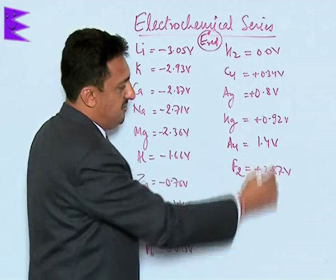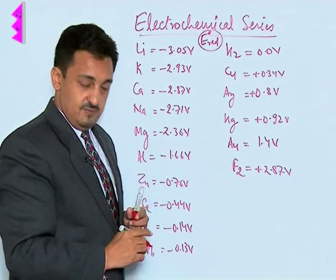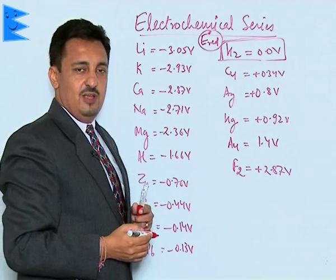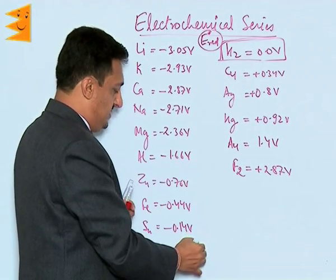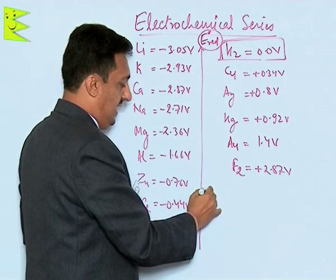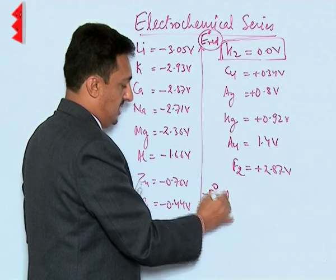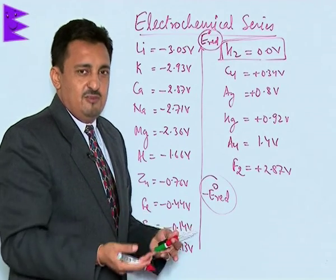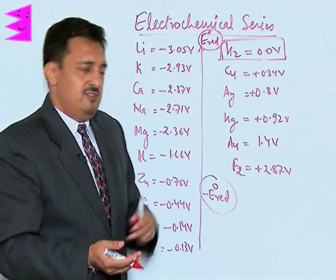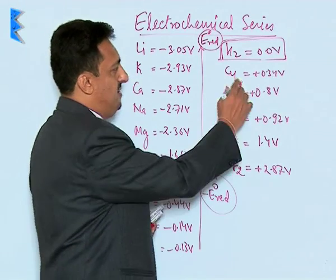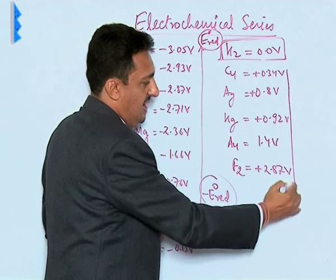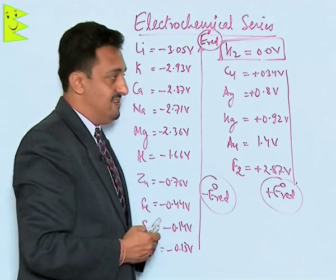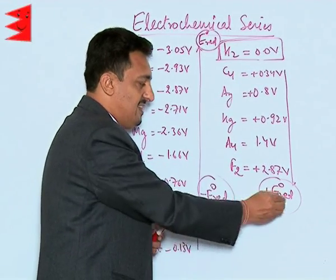Going down the series, E0 reduction values are increasing. The center point is hydrogen, whose value is 0.0 volts. All species lying above hydrogen have negative E0 reduction values — these are species that tend to get oxidized and have higher oxidation potentials. Those species lying below hydrogen all have positive E0 reduction values. The lower the position of a species in this arrangement, the higher its E0 reduction value.